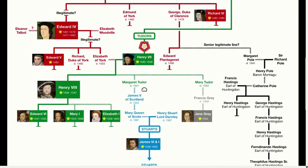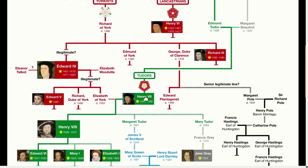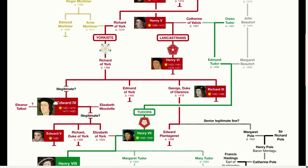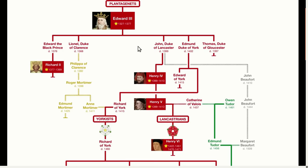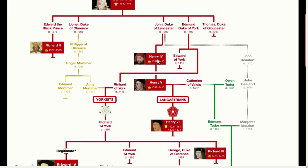Queen Elizabeth sits on the throne today because she's a direct descendant of this guy, and of this guy, and of this guy, and of course this guy. And if we were to go back even further, we could also trace things back to William the Conqueror, Alfred the Great, and even Charlemagne.